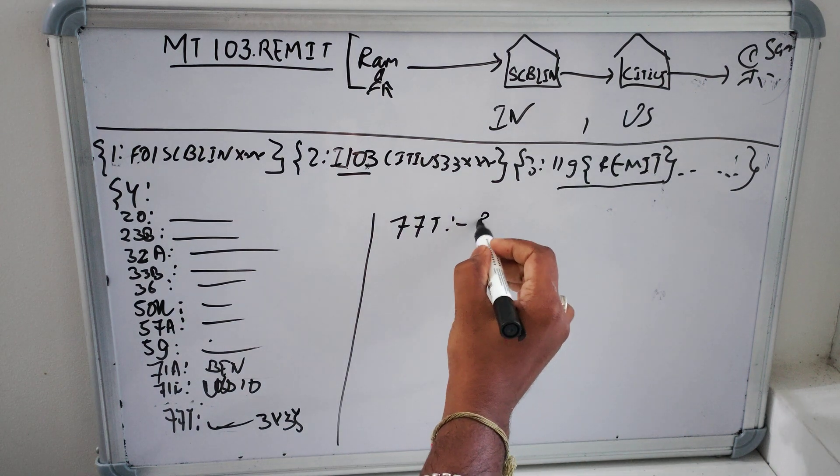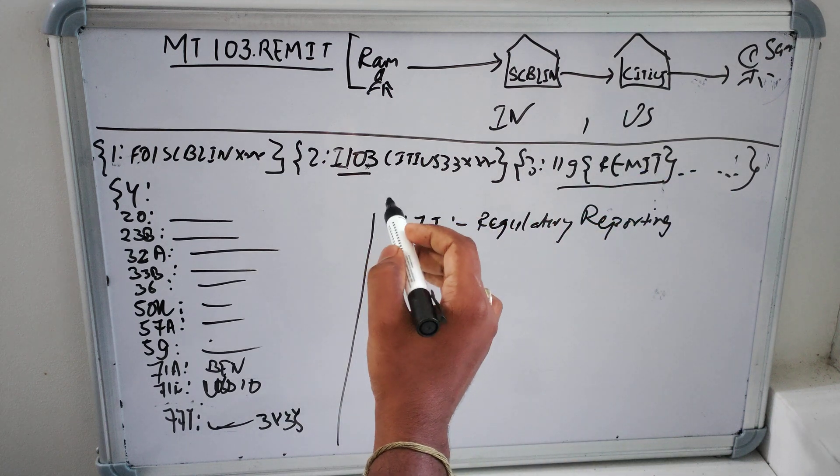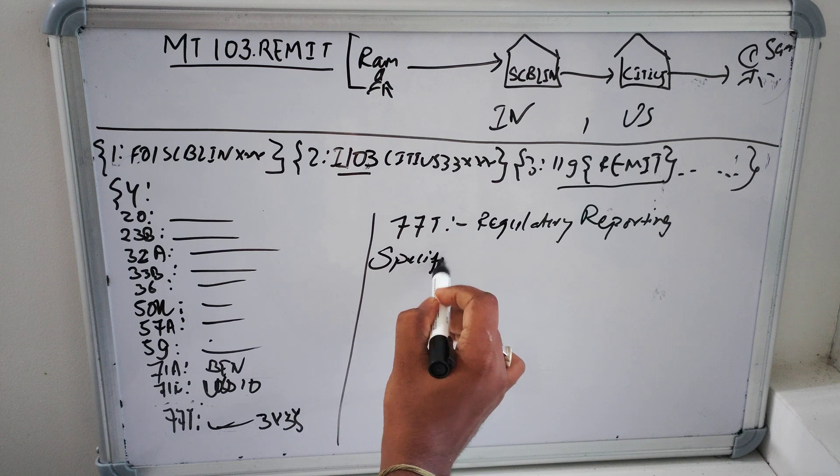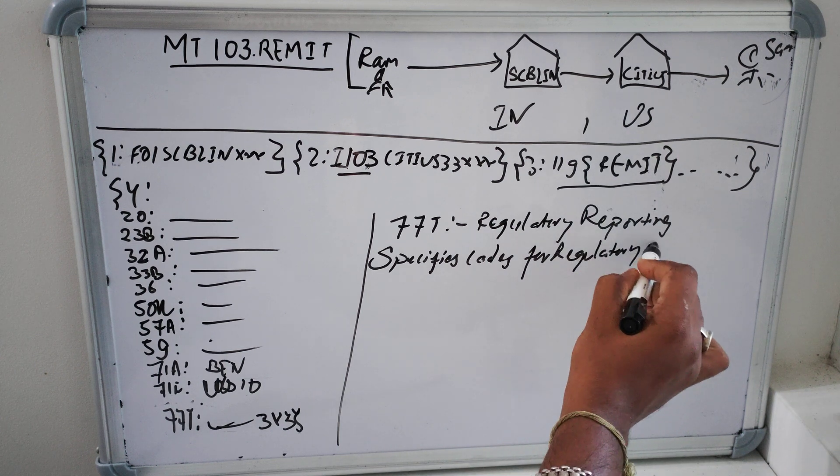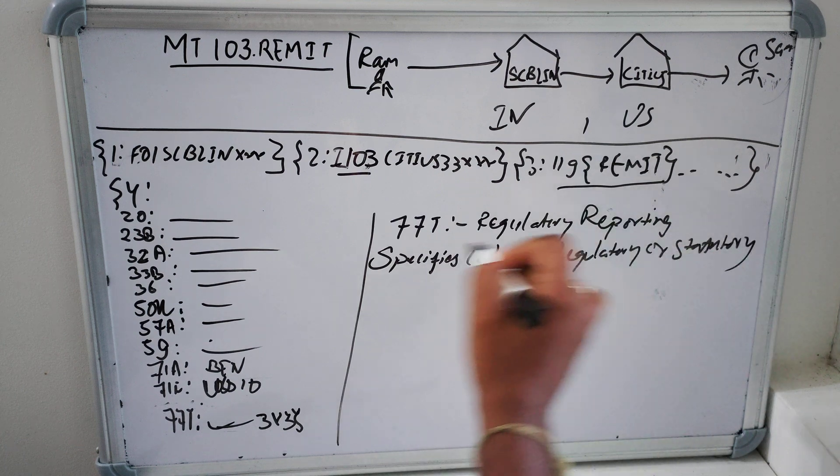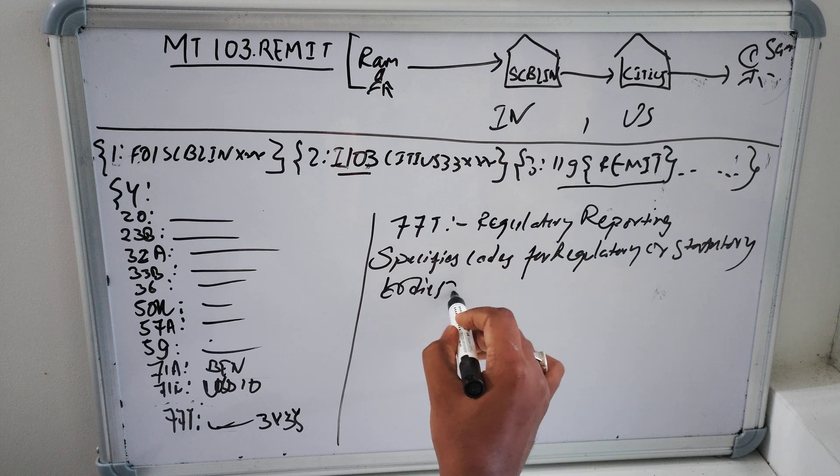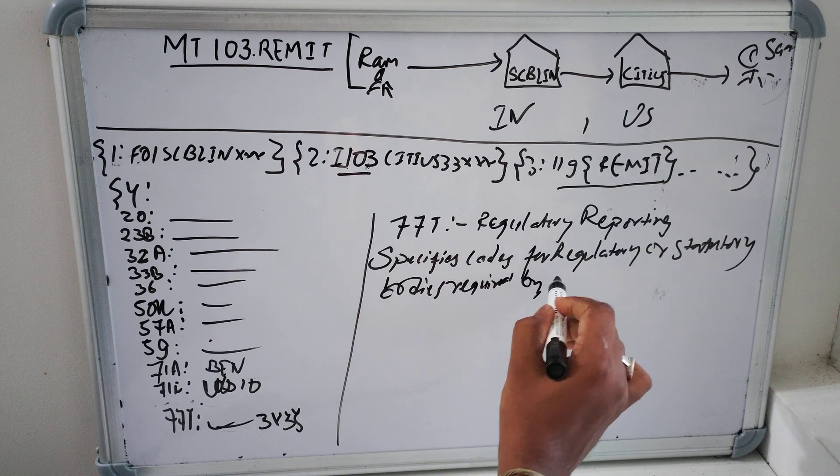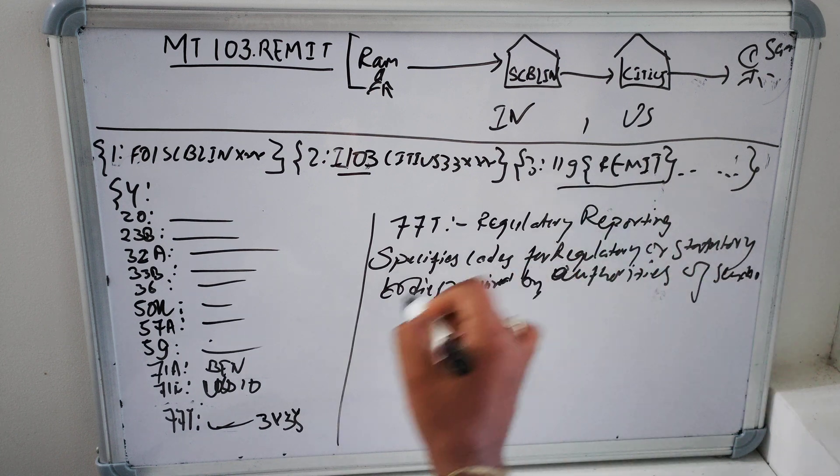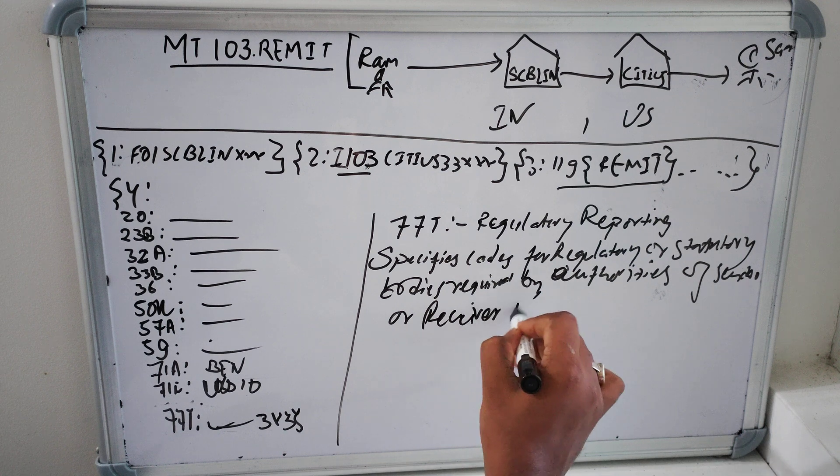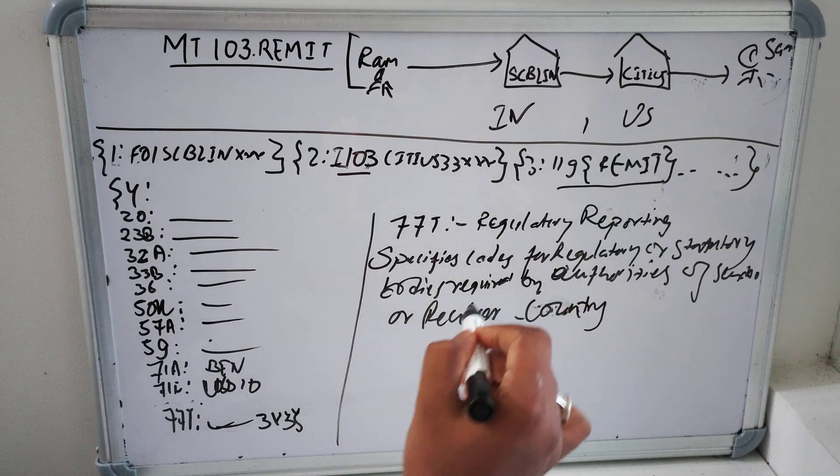77T is for regulatory reporting. Then it specifies codes for regulatory or statutory bodies and required by authorities of sender or receiver bank or country.